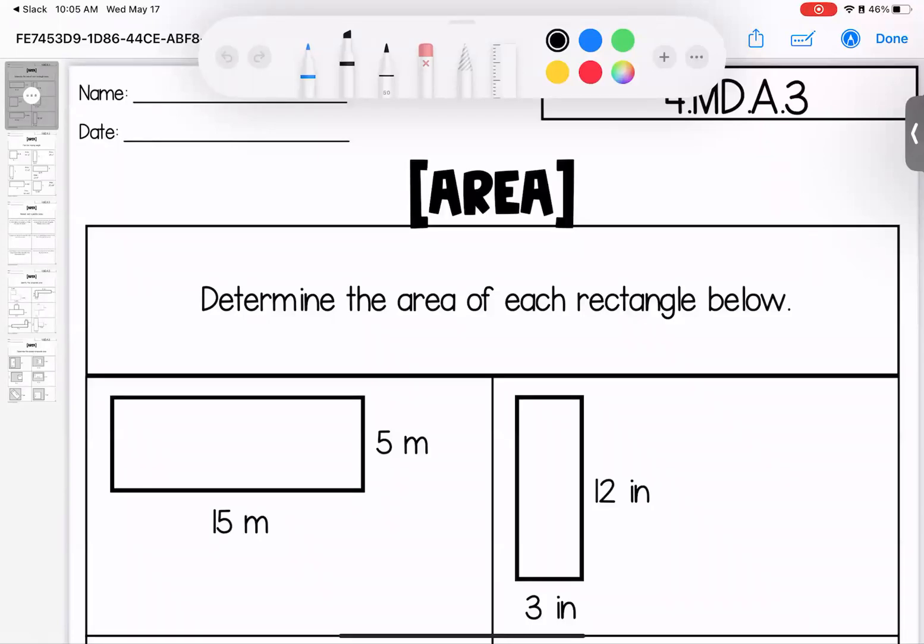Welcome to this week where we are looking at area. Last week we talked about perimeter, this week is area. For area we are multiplying the length times the width, so a lot of multiplication here.